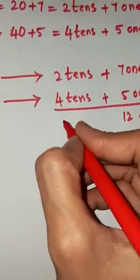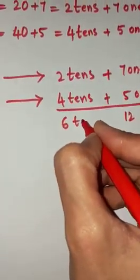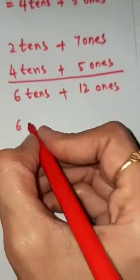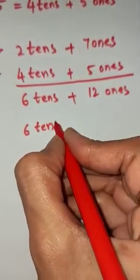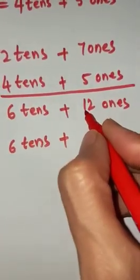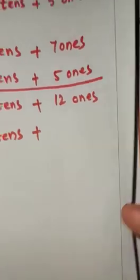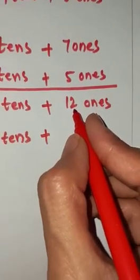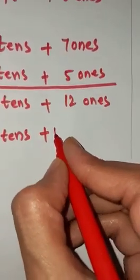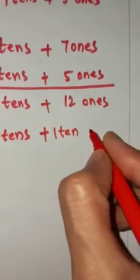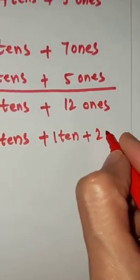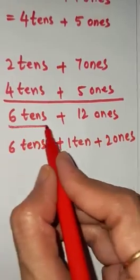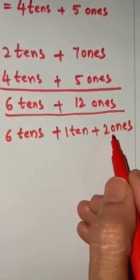2 plus 4 is how much? 6 — 6 tens. Now you see here, 6 tens. Here we have a 2-digit number, so we are giving places of 1s and 10s. 12 ones becomes 1 ten plus 2 ones.